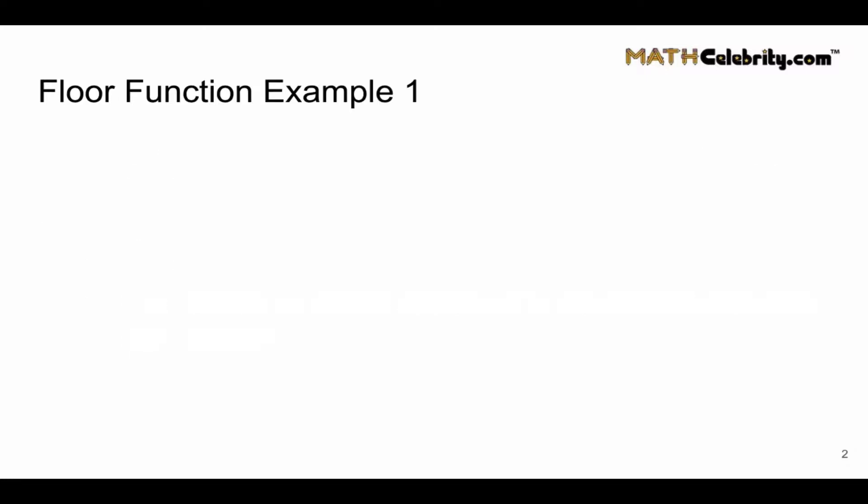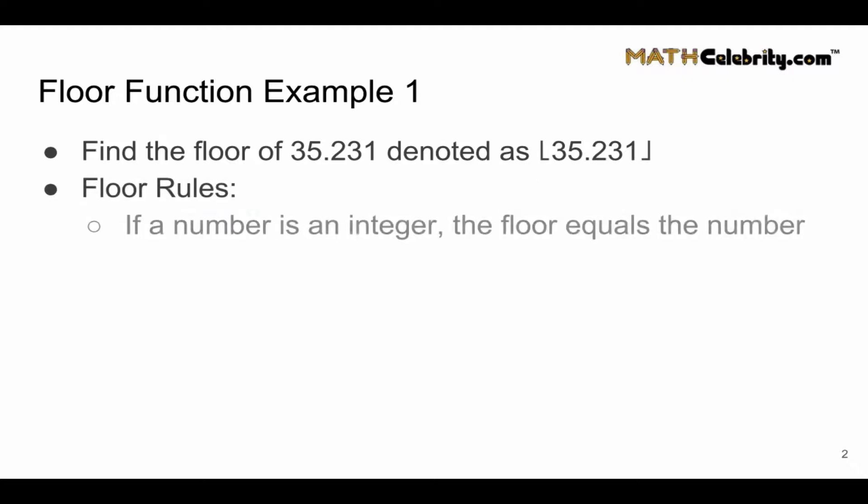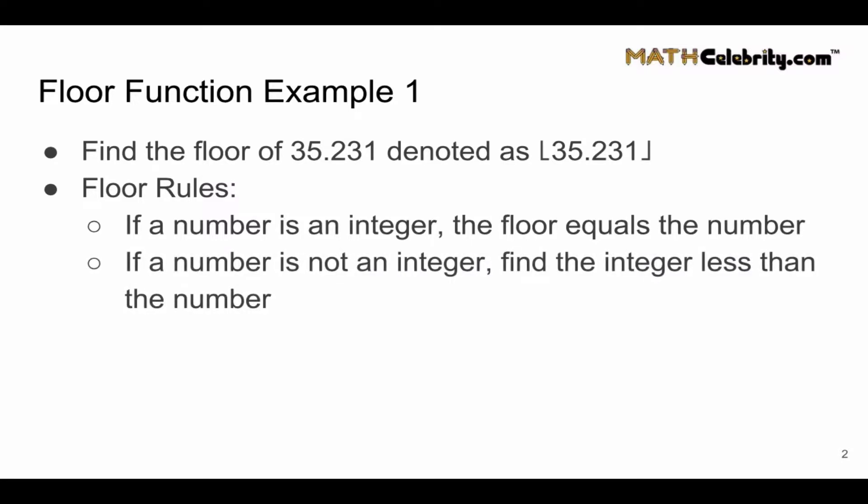Let's look at a few examples. Let's find the floor of 35.231, denoted as floor of 35.231. Let's go through our floor rules. If this number is an integer, it's not so we skip. Let's go to the next step. If this number is not an integer, yes it's not an integer.